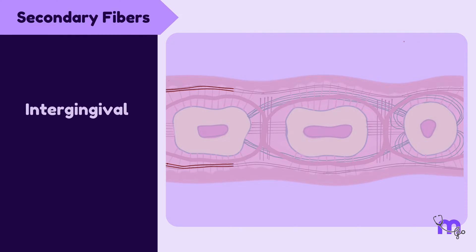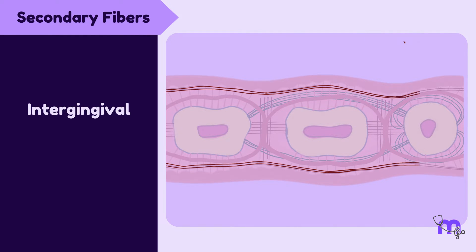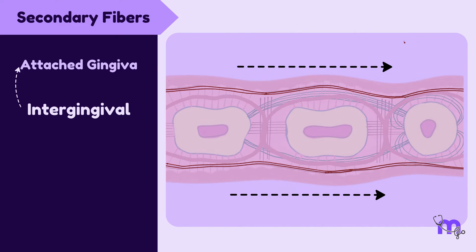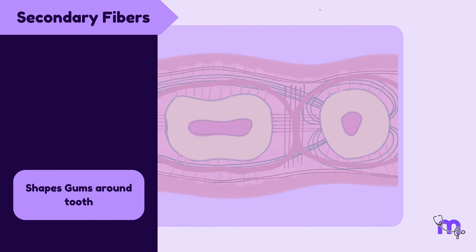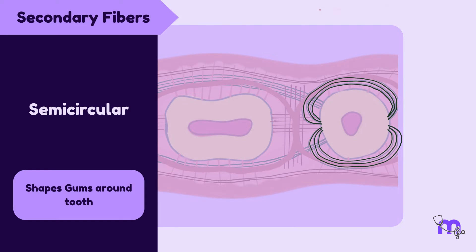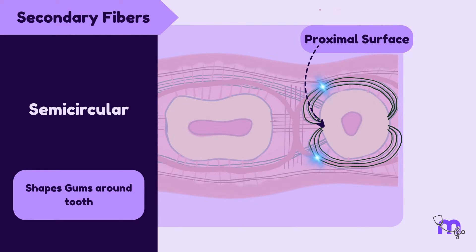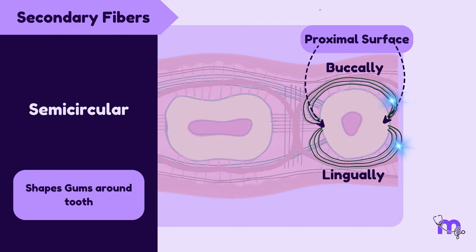Next, we have intergingival fibres, seen in the attached gingiva, running straight down along the teeth, giving the gums their shape and support. And lastly, we have semicircular fibres, which start from the proximal surface of one tooth, split buccally and lingually, and end in the proximal surface of the same tooth. They act like little loops around each tooth, helping to shape the gums around them.